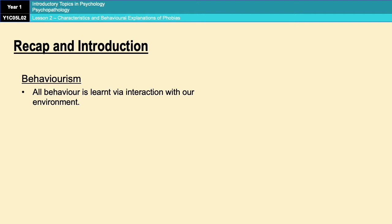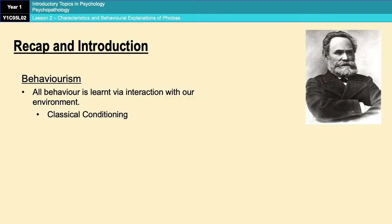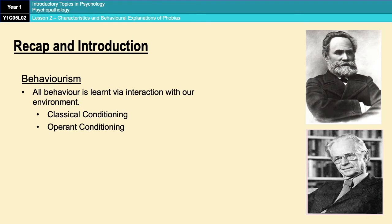Behaviorism says that all behavior is learned via our interaction with our environment and that all behavior comes from either classical conditioning — learning by association, put forward by Pavlov in his famous Pavlov's dogs study — or operant conditioning, put forward by Skinner in Skinner's rats study. If you can't remember those or don't know much about behaviorism, I'd suggest going back to review that before continuing with this video.